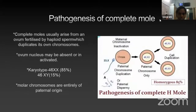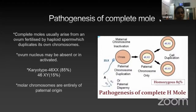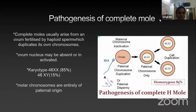Moving on to pathogenesis, we will start with complete moles. Complete moles usually arise from an ovum fertilized by a haploid sperm which duplicates its own chromosomes. The ovum nucleus may be either absent or inactivated. As a result, the karyotype will be 46XX in 85% of cases and 46XY in 15% of cases. Hence, molar chromosomes are entirely of paternal origin.